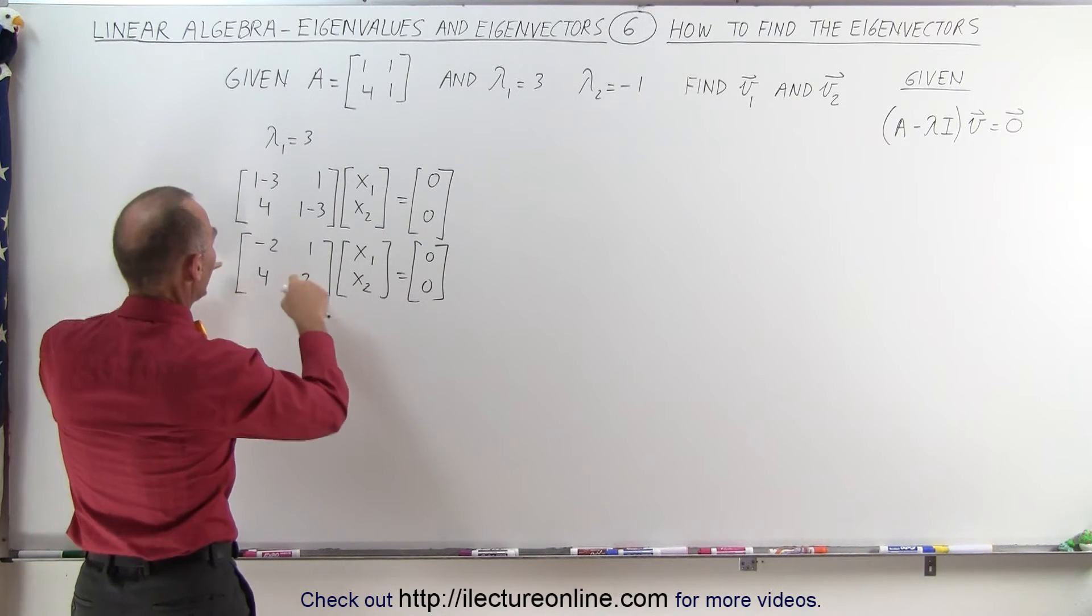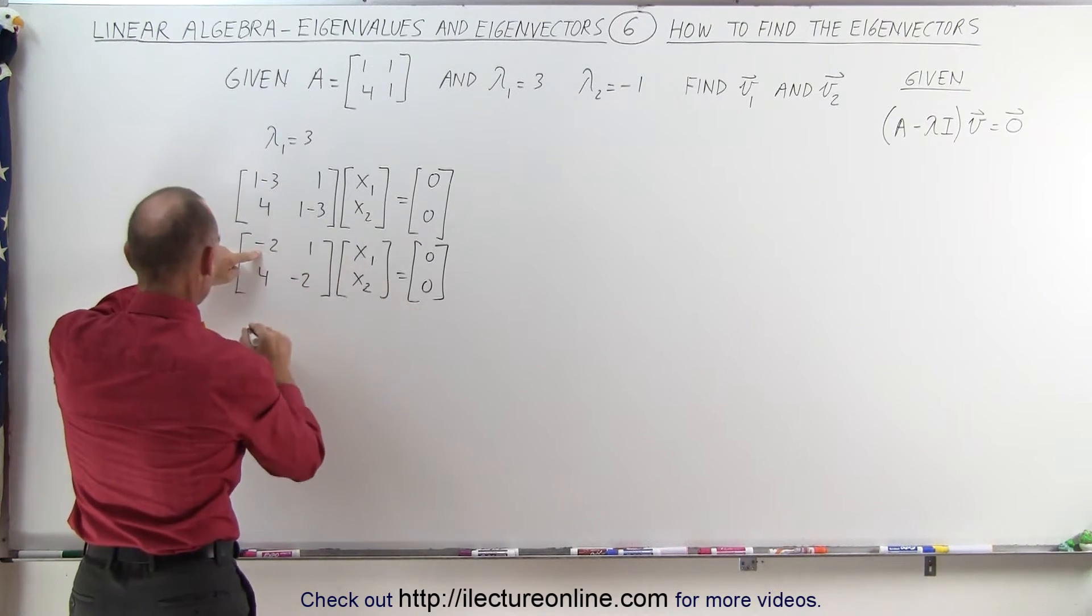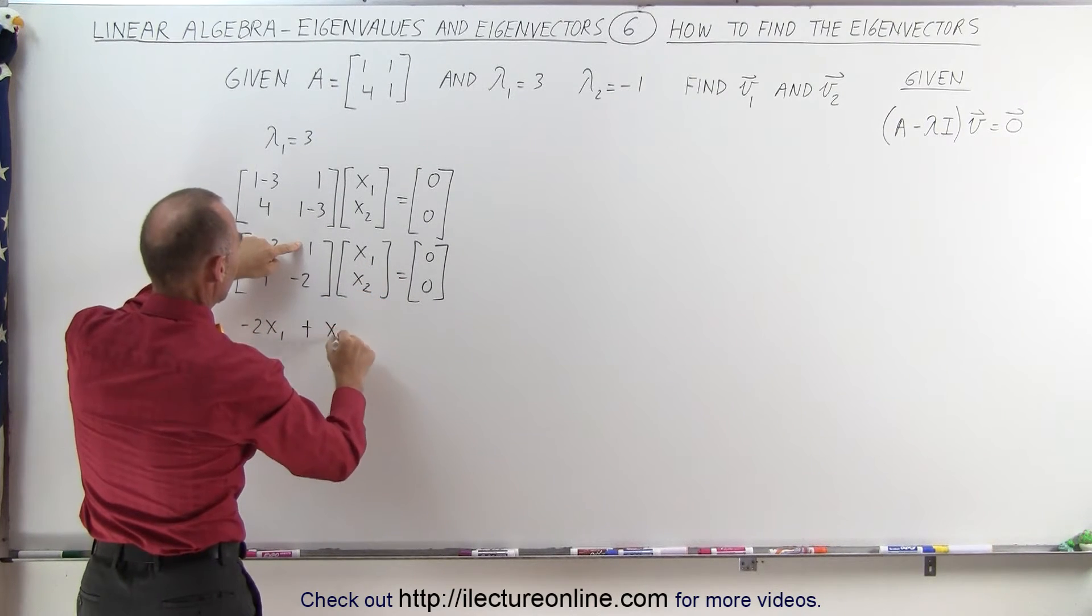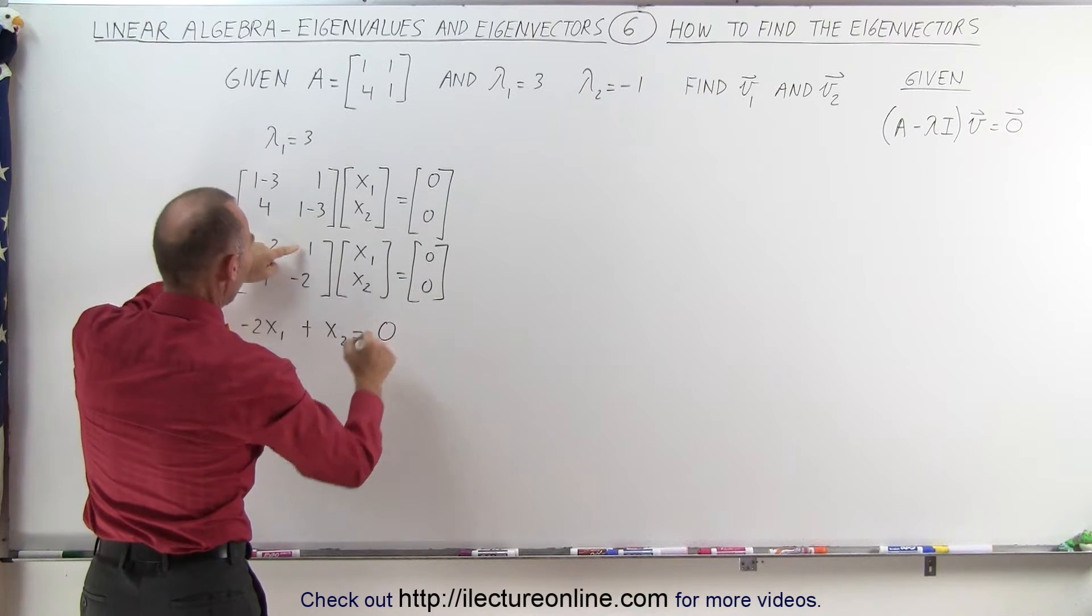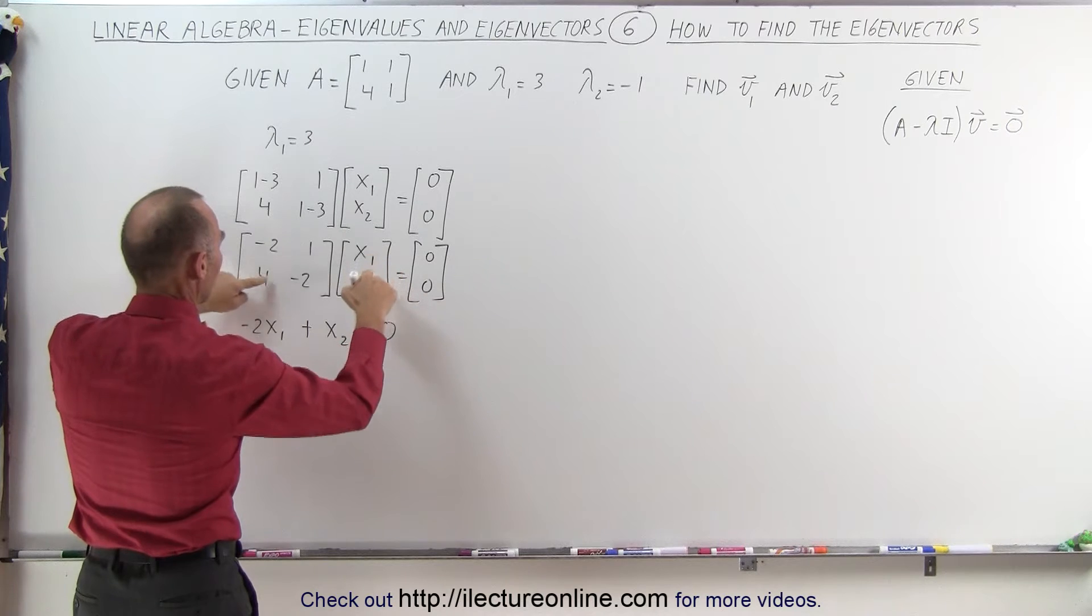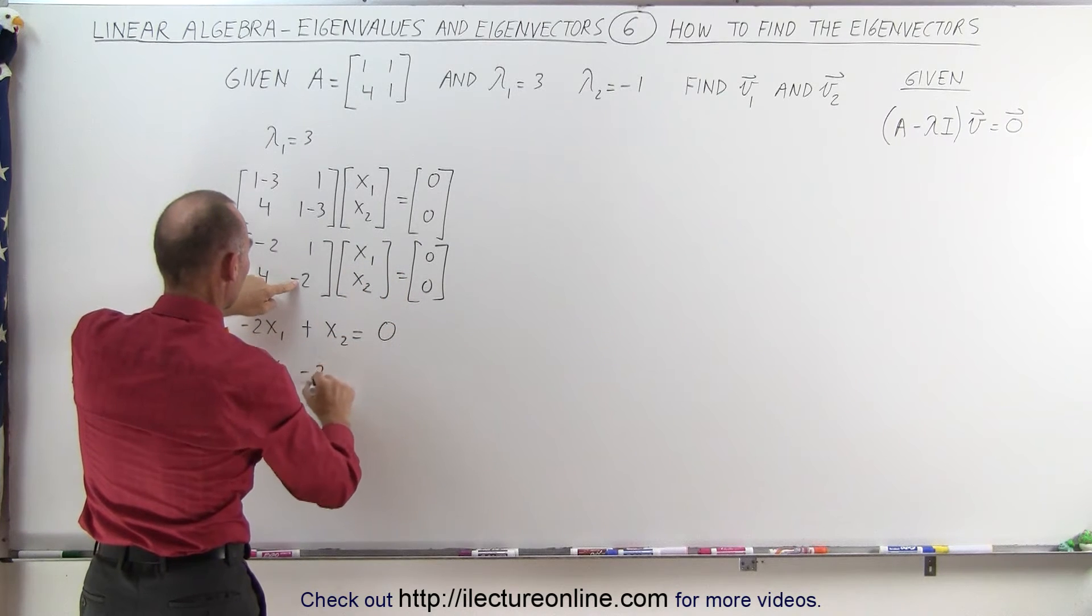Let's go ahead now and multiply this through. So we get minus 2 times x1 plus 1 times x2 equals 0. And here we get 4 times x1, plus, minus 2 times x2 is equal to 0.